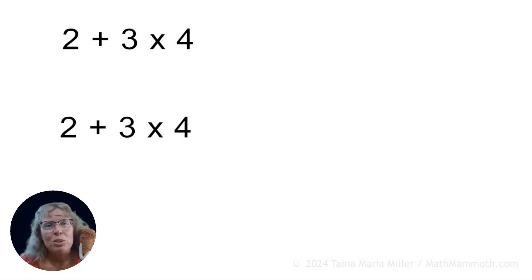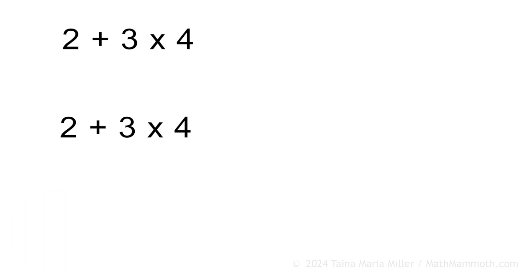And let's do it two ways. First we will go from left to right and then we will do multiplication first. So here let's first do left to right, so let's do 2 plus 3 first, that's 5. Then we get 5 times 4, so that would make it 20.